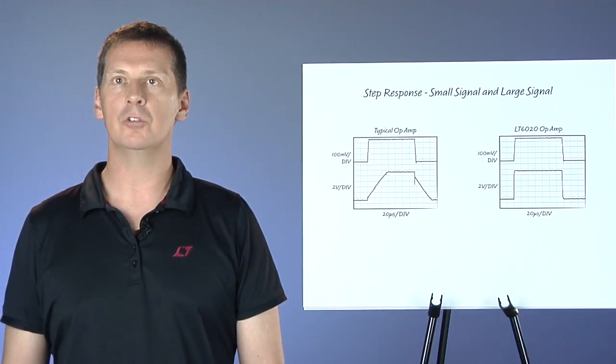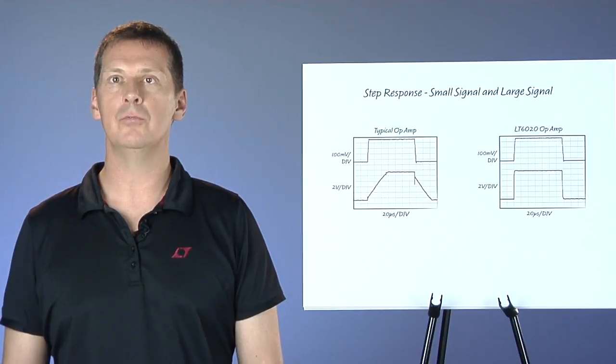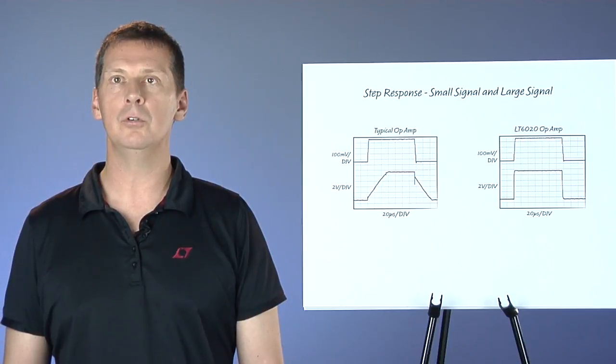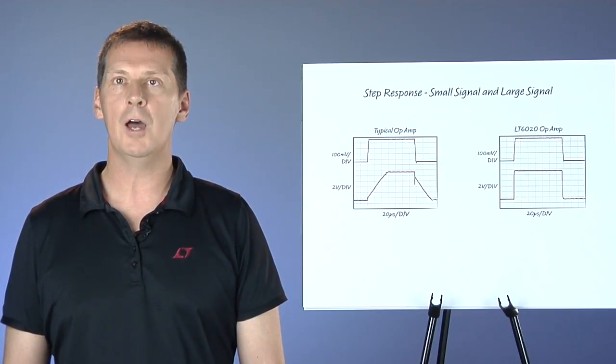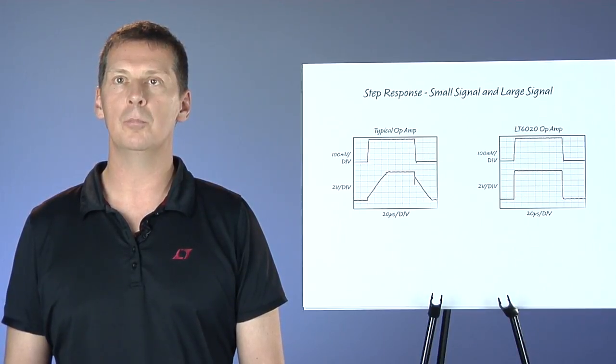Op-amps with low power consumption tend to be slow. In particular, op-amp slew rate is often very closely related to the op-amp supply current. That is because the internal current available to charge internal capacitors is a fixed proportion of the op-amp total supply current. The LT6020 is a new type of op-amp with a much higher slew rate than you would expect for the low supply current.